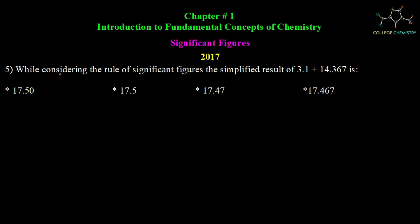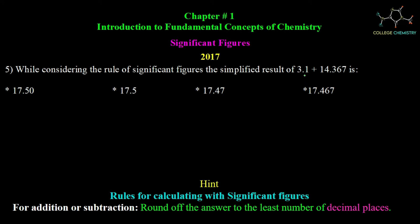Question number 5: considering the rule of significant figures, what is the simplified result of 3.1 + 14.367? The calculator gives 17.467. For addition, we round off to the least number of decimal places. The number 3.1 has only one decimal place, which is the least.